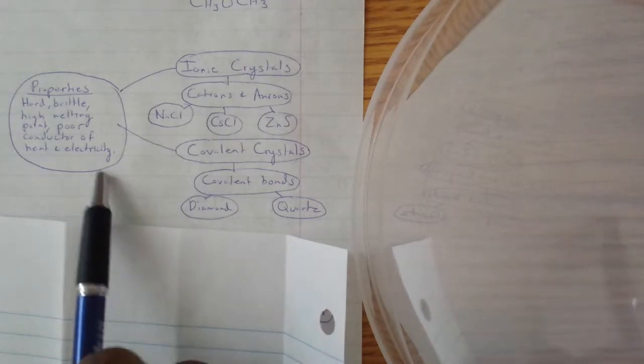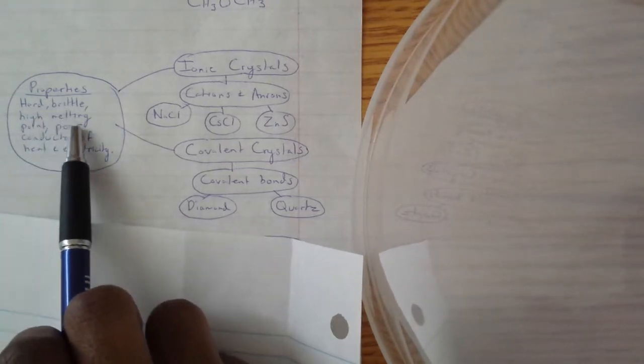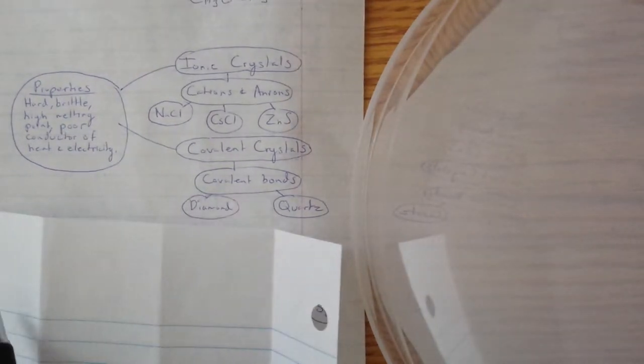Diamond and quartz are good examples because they show how the properties are hard, brittle, and have a high melting point because of such strong forces.